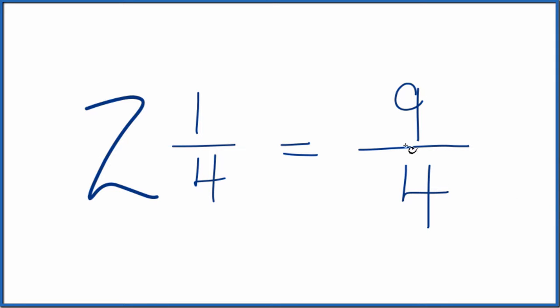So let's try that again. We take the whole number, two, we multiply that by the denominator, four. Two times four, that's eight. Then we add it to the numerator. That gives us the nine. Just bring the four across. That gives us the improper fraction.